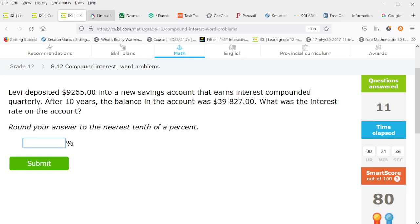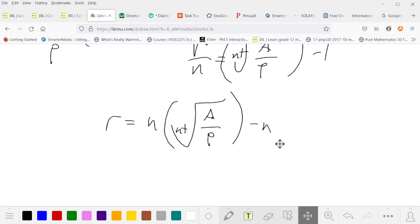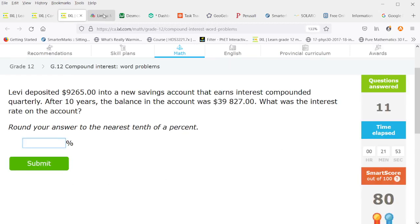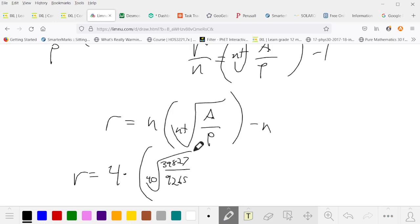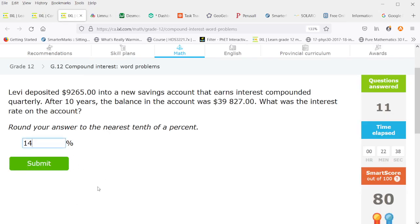So now the interest is compounded quarterly and it's been 10 years. So with the full substitution we've got 4 times and it's going to be the 40th root of 39,827 over 9265 minus 4. So we'll take the 40th root. Okay so we'll multiply that by 4 and then subtract 4. I'm getting 0.14852, so roughly a 15 percent interest rate or to the nearest 10th it's 14.9.